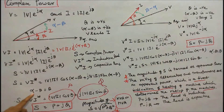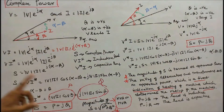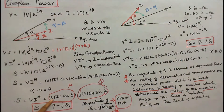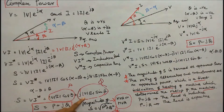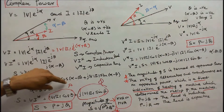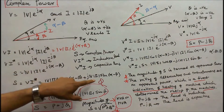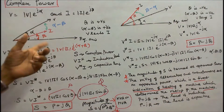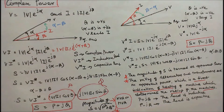Let alpha minus beta equal theta. Therefore, S equals modulus of V times modulus of I times cos theta, plus j times modulus of V times modulus of I times sin theta. The first term is P and the second term is Q. Therefore, complex power S equals P plus jQ.